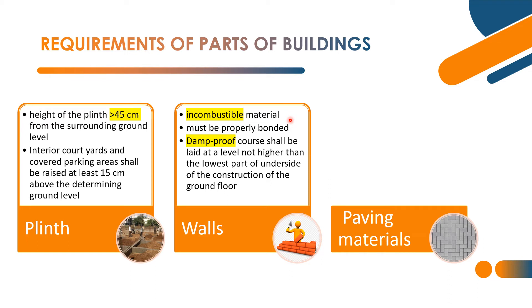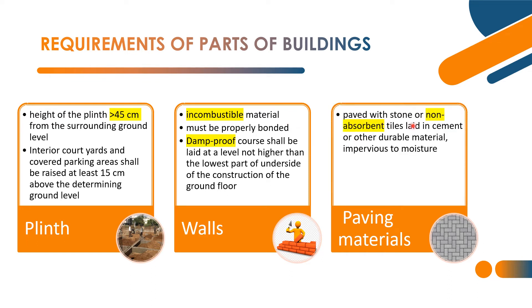Next on paving materials: the building floor shall be paved with stone or non-absorbent tiles laid in cement or other durable material that is impervious to moisture. The material is non-absorbent — water-repelling material. The tiles can be paved with stone or laid in cement so that binding will happen. The criteria is that the material is impervious to moisture.